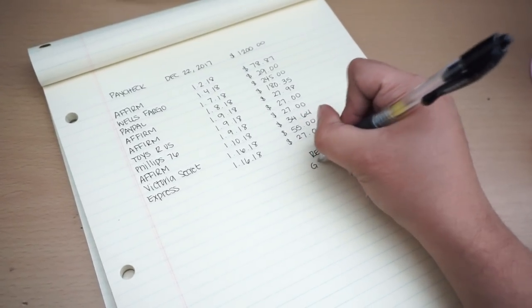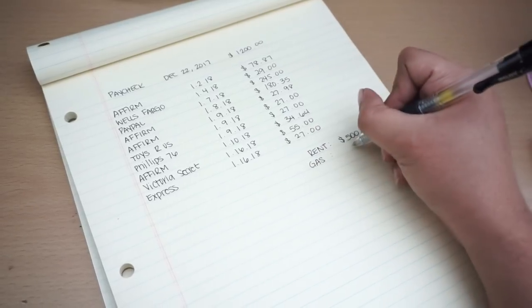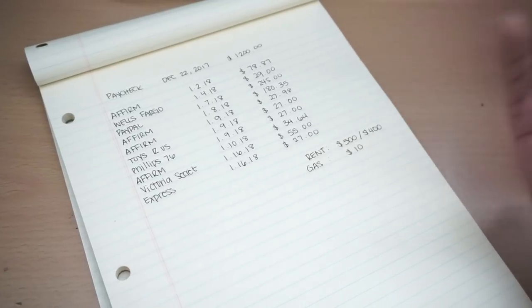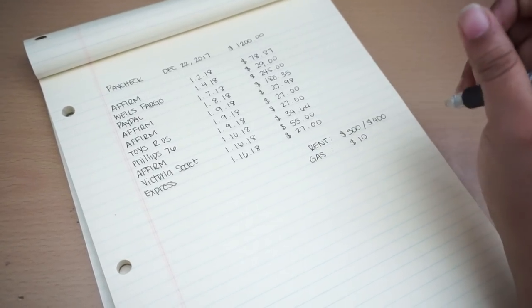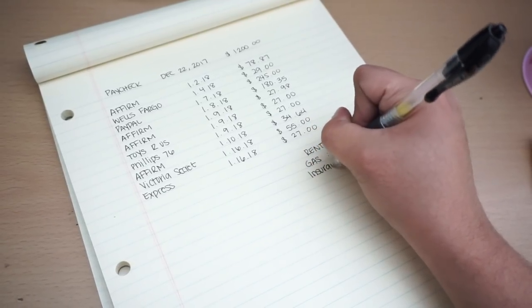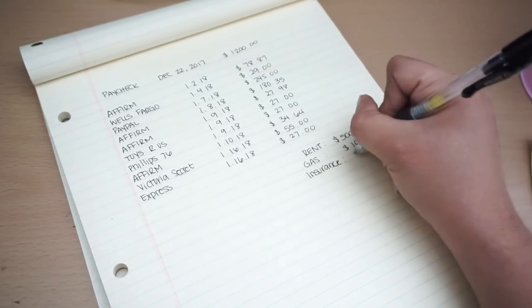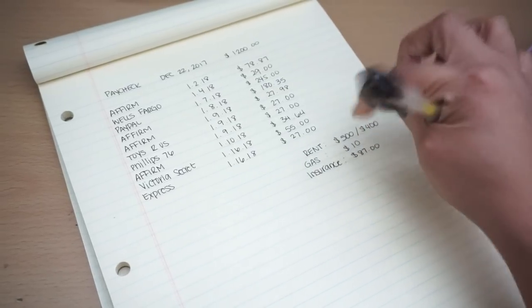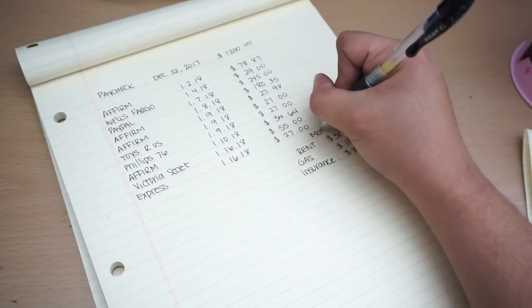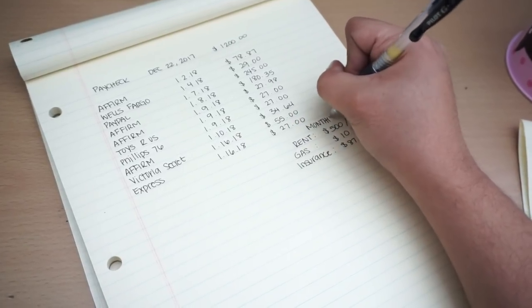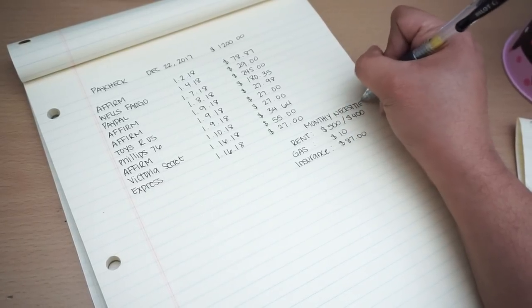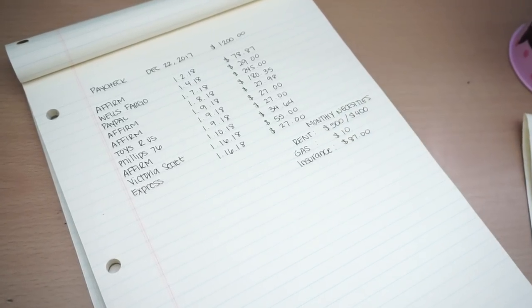So then, for my natural gas, I always estimate at $10, just because it varies. I can be at $7, I can be at $9 or $10. But it's never more than $10, just because I don't cook, I don't bake. My insurance for my car is always the same. It's at $87. And these are my four walls. I always put them down as my monthly necessities.